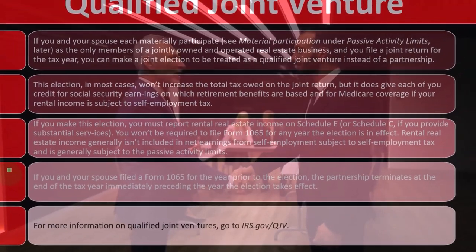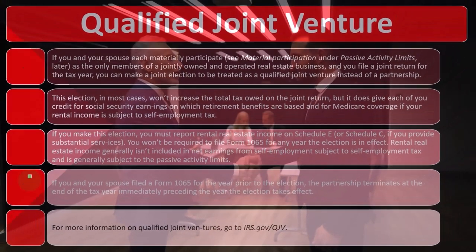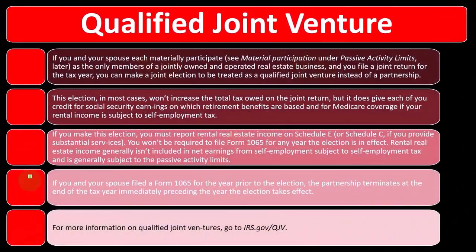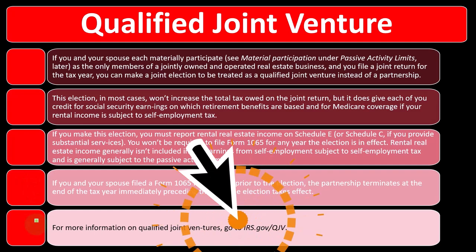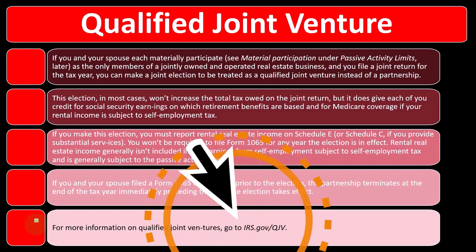Once again, if you and your spouse filed the Form 1065 partnership return for the year prior to the election, the partnership terminates at the end of the tax year immediately preceding the year the election takes place. For more information on qualified joint ventures, you can go to irs.gov/QJV.